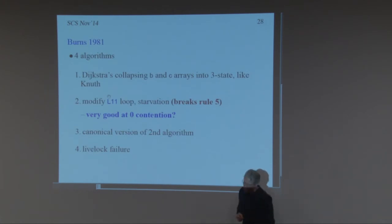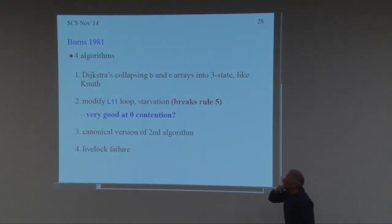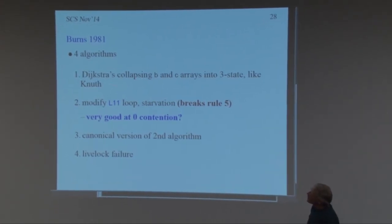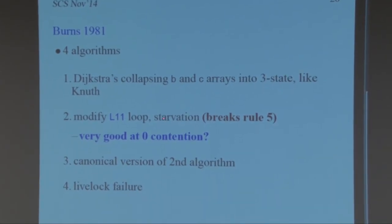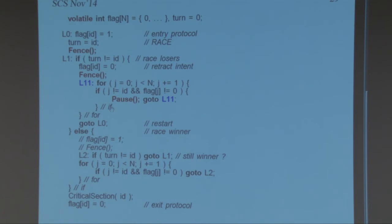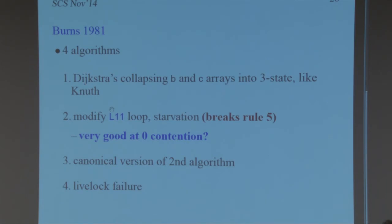Burns published a paper with four algorithms. The first is a straightforward change on Dijkstra's by combining arrays. The second we made run faster but discovered it has starvation. The third is a canonical modification of the second. The fourth is absolute rubbish — doesn't work at all. We repeatedly went through these papers, found algorithms with long complicated proofs of correctness, and then found they were wrong.